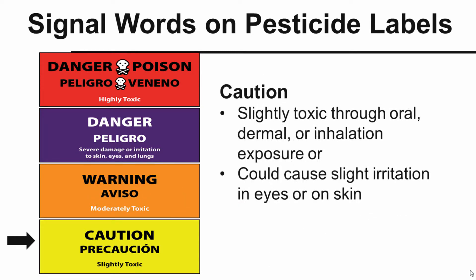'Caution' indicates slight toxicity through oral, dermal, or inhalation exposure, and could cause slight irritation in the eyes or on the skin. This is the lowest of the toxicity categories, and more and more products are finding themselves in this caution category, which is good news — we've been able to develop products with lower toxicity. In some cases there's an even lower toxicity range where EPA does not require any signal word at all, but most manufacturers will still place the 'Caution' signal word on the product.